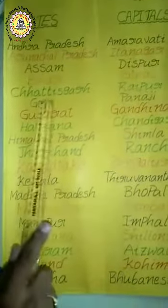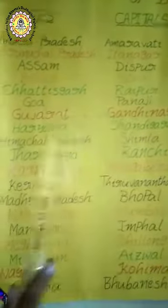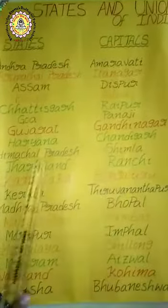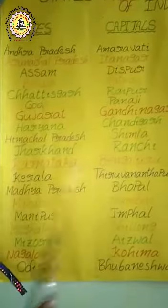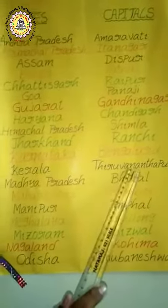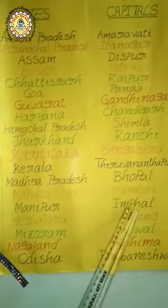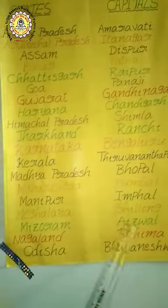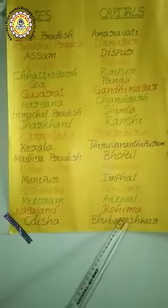Chhattisgarh, Raipur. Goa, Panaji. Gujarat, Gandhinagar. Haryana, Chandigarh. Himachal Pradesh, Shimla. Jharkhand, Ranchi. Karnataka, Bengaluru. Kerala, Thiruvananthapuram. Madhya Pradesh, Bhopal. Maharashtra, Mumbai. Manipur, Imphal. Meghalaya, Shillong. Mizoram, Aizawl. Nagaland, Kohima. Odisha, Bhubaneswar.